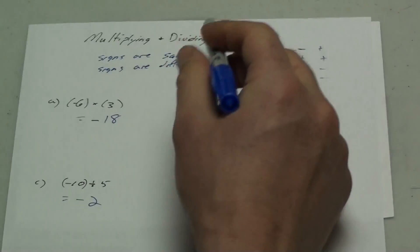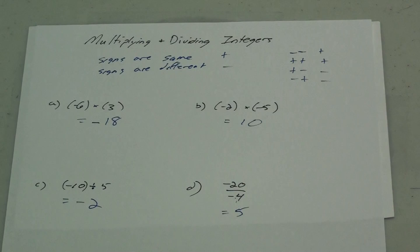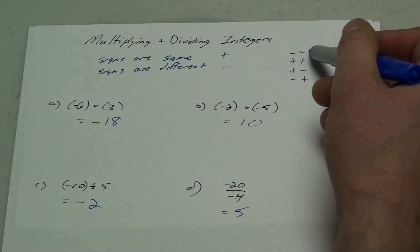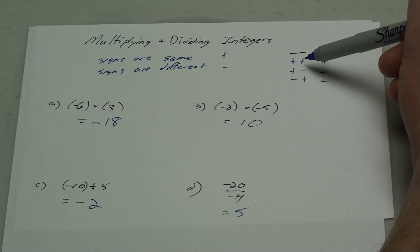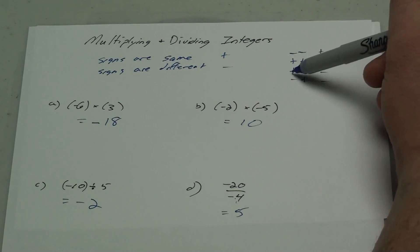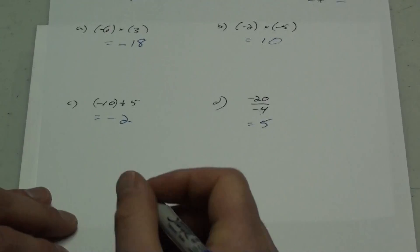So if the signs are the same, your answer is positive. If the signs are different, your answer is negative. Two negatives make a positive. Two positives make a positive. Positive and negative make a negative. Negative and a positive makes a negative.